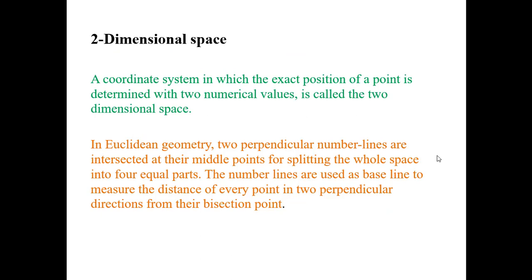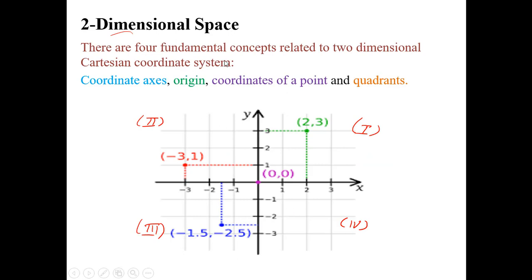Two-dimensional space: a coordinate system in which the exact position of a point is determined with two numerical values is called the two-dimensional space. In Euclidean geometry, two perpendicular real number lines are intersected at their midpoints — midpoint means 0 — splitting the whole space into four equal parts called quadrants. There are four fundamental concepts related to the two-dimensional Cartesian coordinate system.